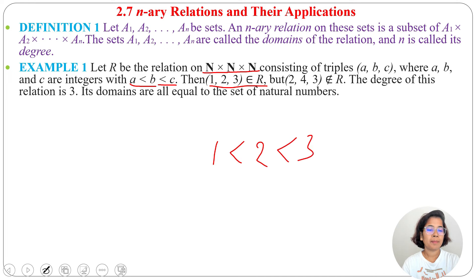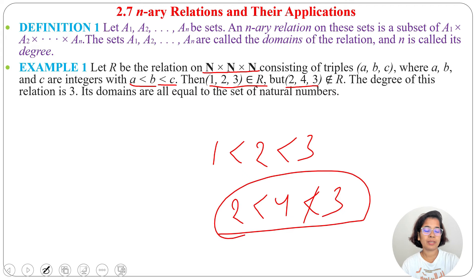But (2, 4, 3) does not belong to the relation, as 2 < 4 but 4 is not less than 3, so this does not belong. We can say (5, 8, 10) belongs to the relation: 5 < 8 and 8 < 10. So any three natural numbers where the first is less than the second and the second is less than the third belongs to this relation.